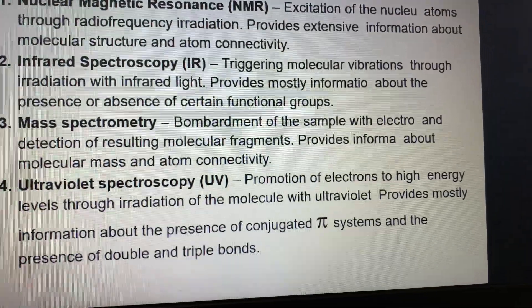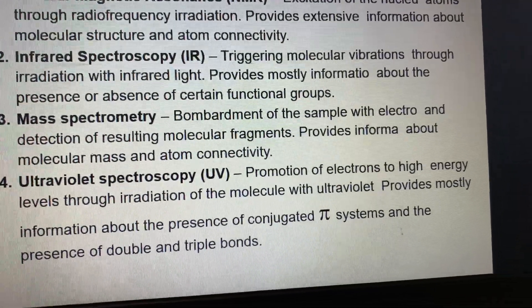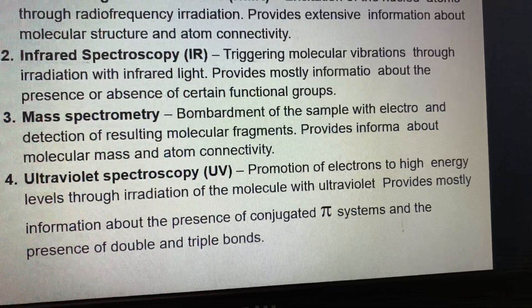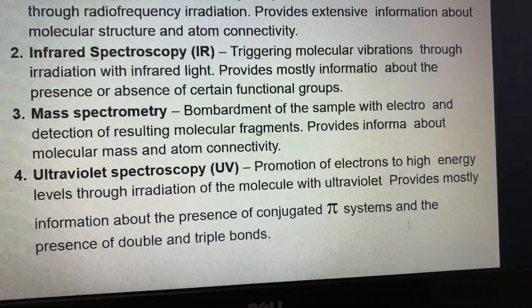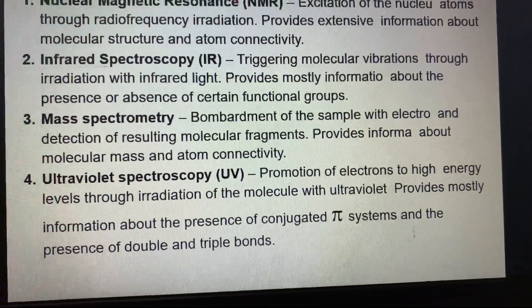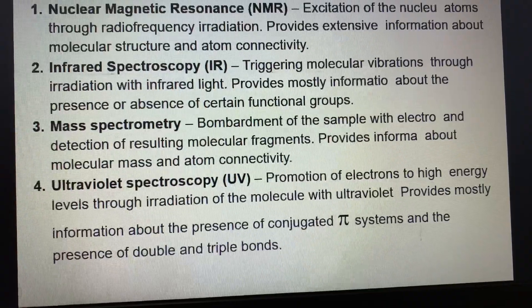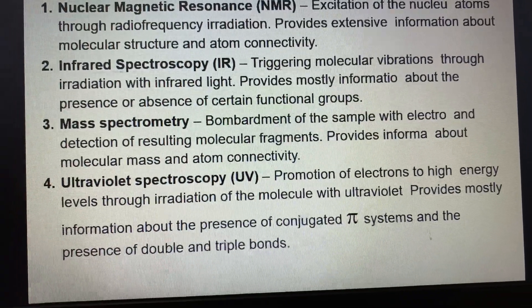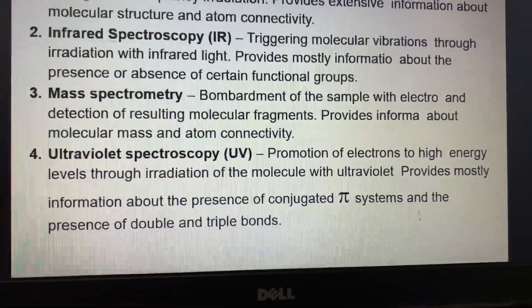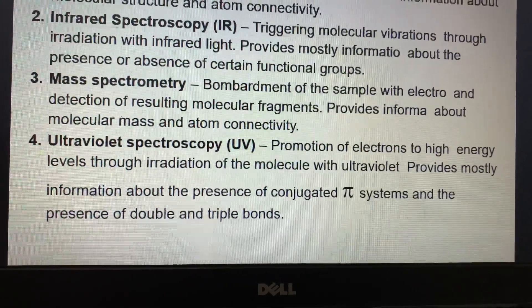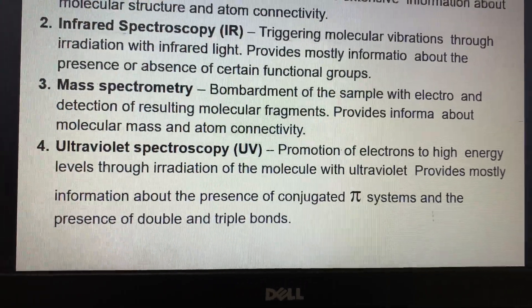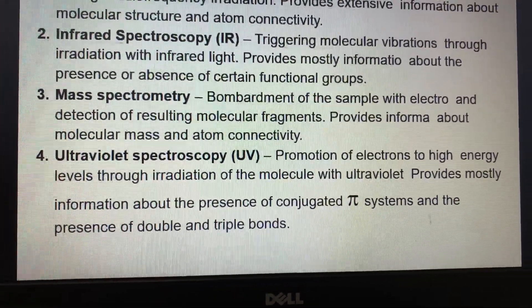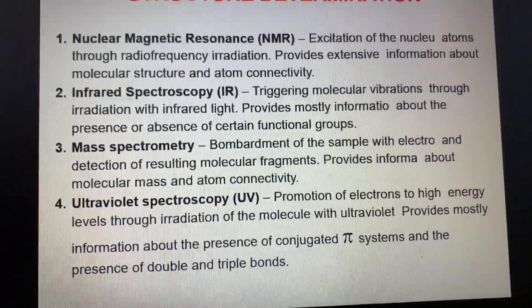UV spectroscopy involves promotion of electrons to high energy levels through irradiation of molecules. The absorption at different wavelength ranges indicates different conjugations, pi systems, and double or triple bonds, which helps us decide the basis of structure elucidation.